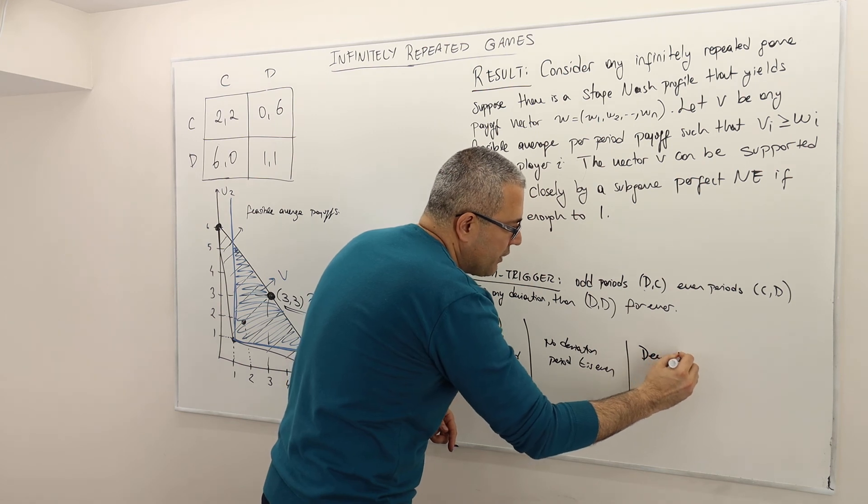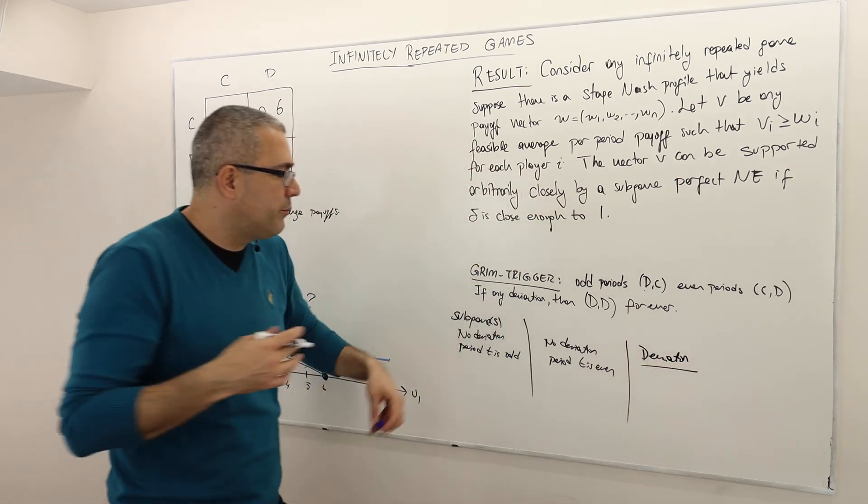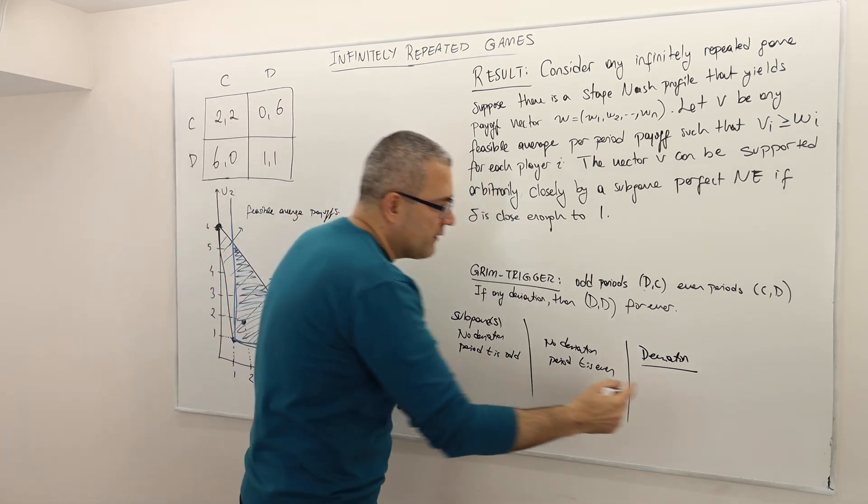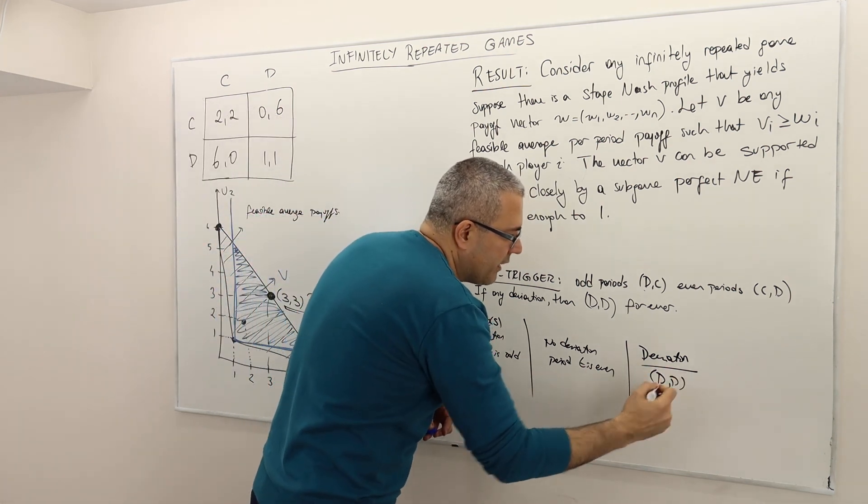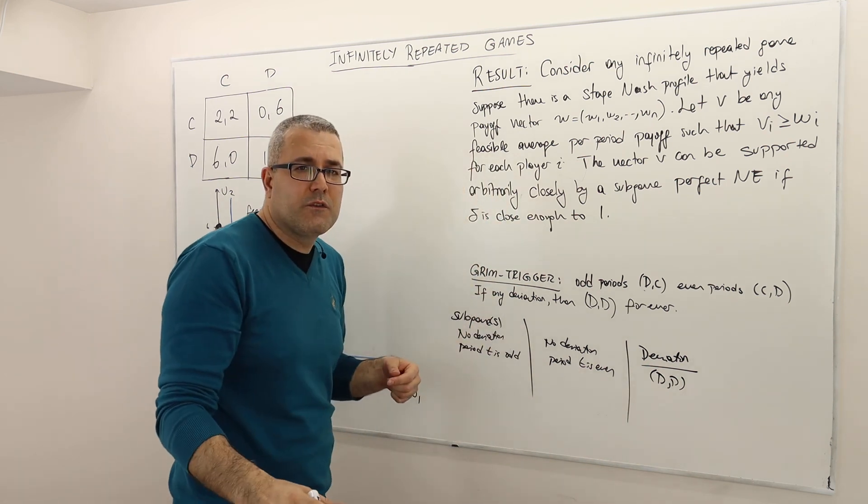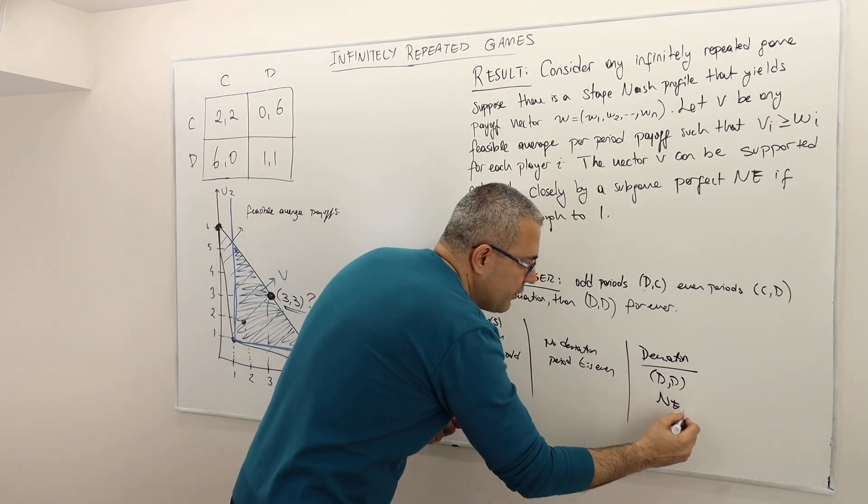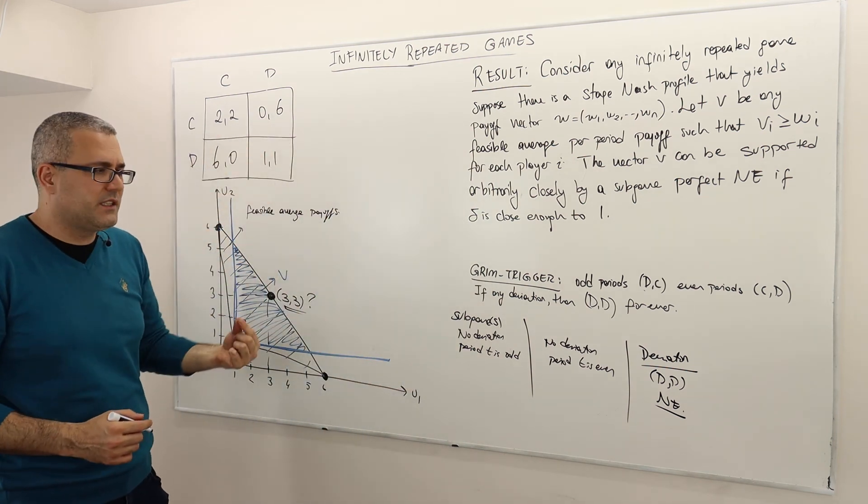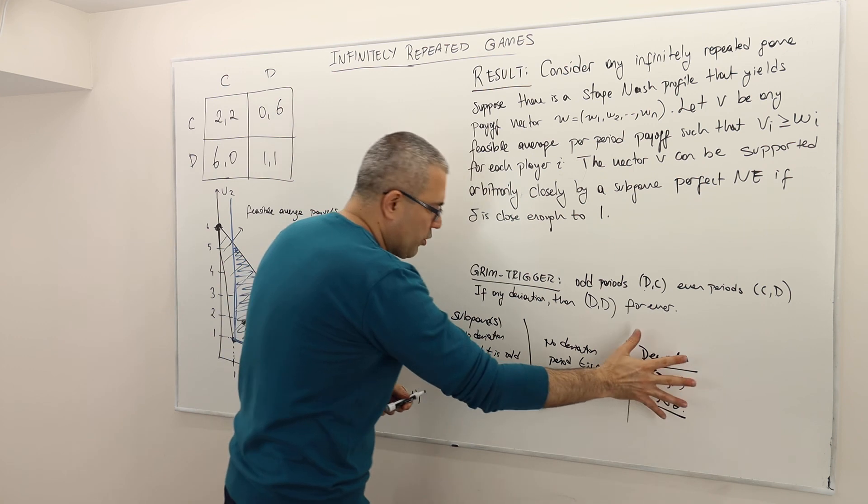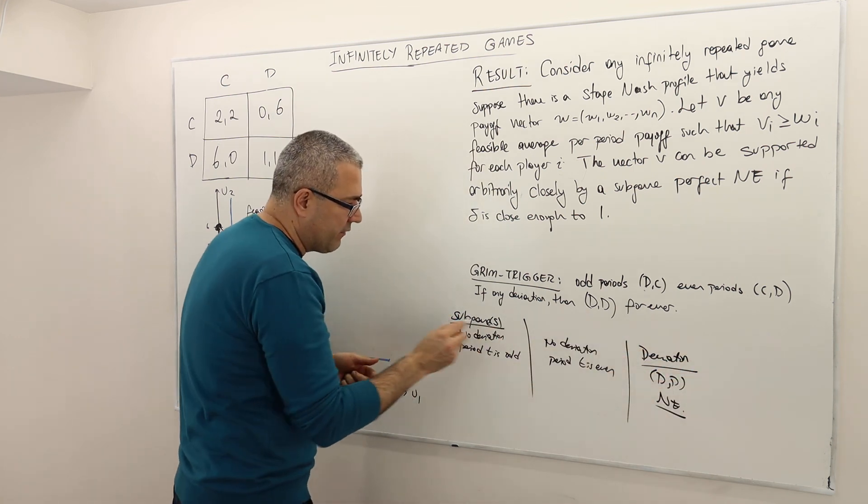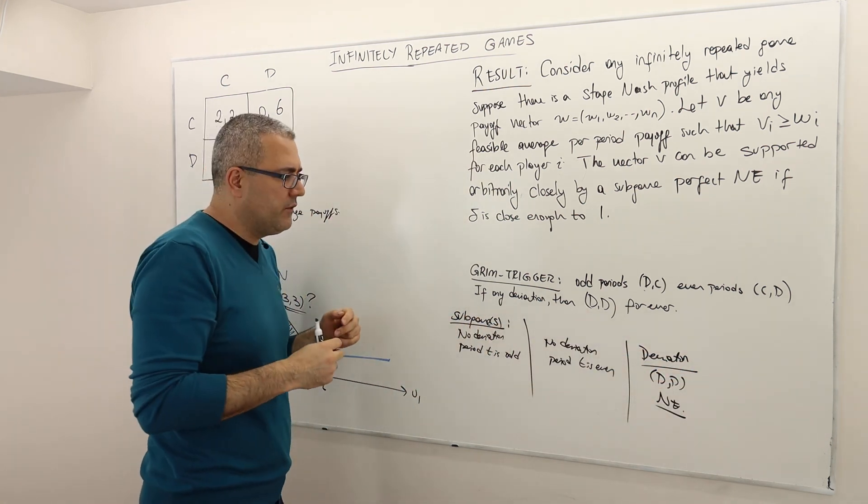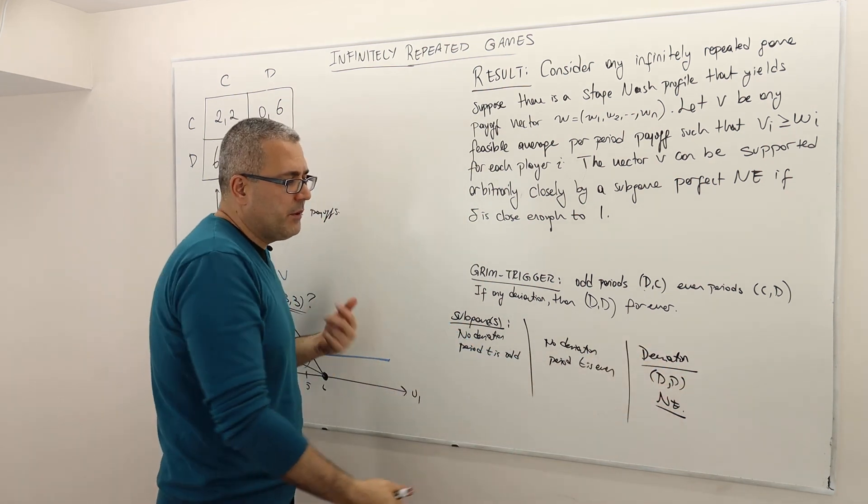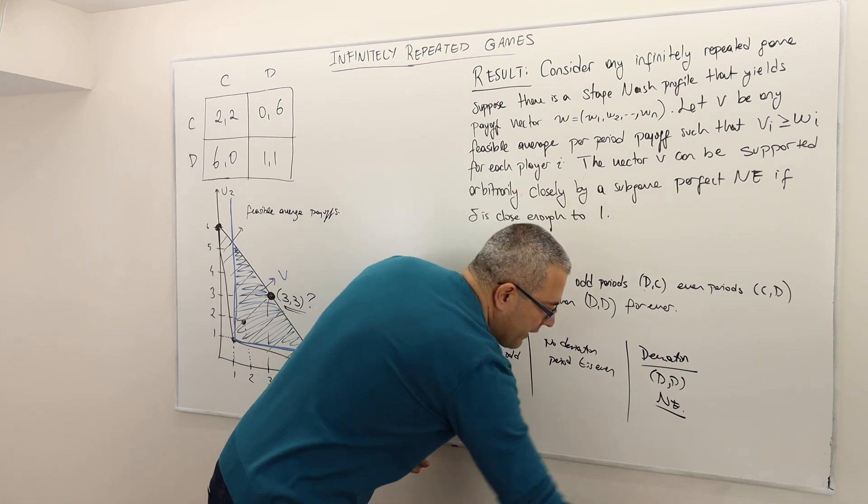Well in this case, whether period is even or odd, who cares? What we know is that DD forever is the strategy for the rest of the game. And we know that this constitutes Nash equilibrium because DD is a Nash equilibrium of the stage game. So we do not really worry about subgames. So there are three classes of subgames we need to analyze. We don't really need to make analysis for this subgame because we already know they are forming Nash equilibrium.